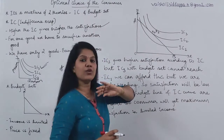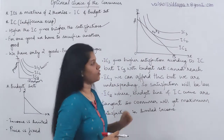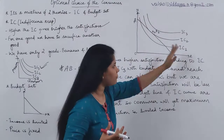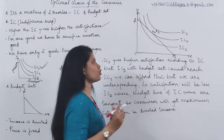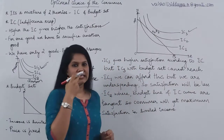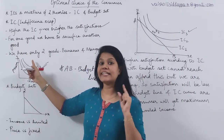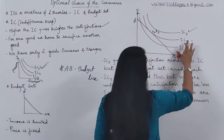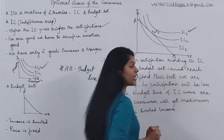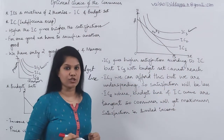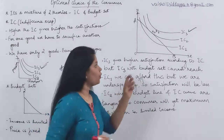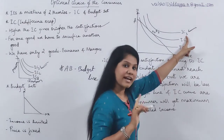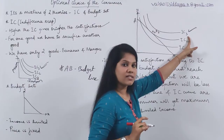In this diagram, you have to determine which indifference curve gives you the highest satisfaction. These are named IC3, IC2, and IC1 for easy analysis. According to the indifference curve theory, IC3 gives you the highest satisfaction. That is true — but you have to understand one important thing here.